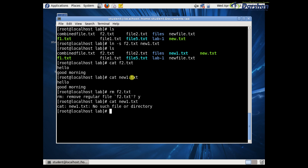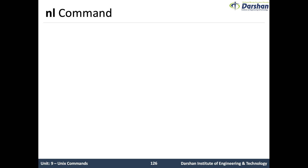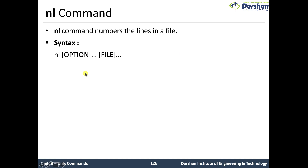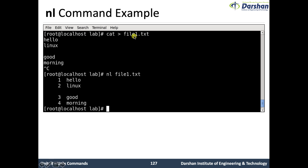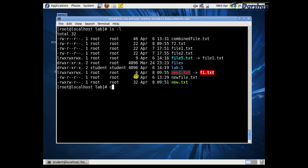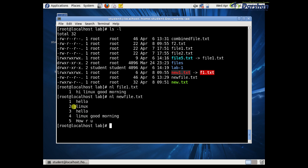The next command is the nl command. This nl command numbers the lines in a file. The syntax is: nl [options] [filename]. Options include: -i for line number increment at each line, -s to add a string after the line number, and -w to set the number of columns for the line number. Let us see: nl new_file.txt — this file has five lines, so numbering starts from one to five.